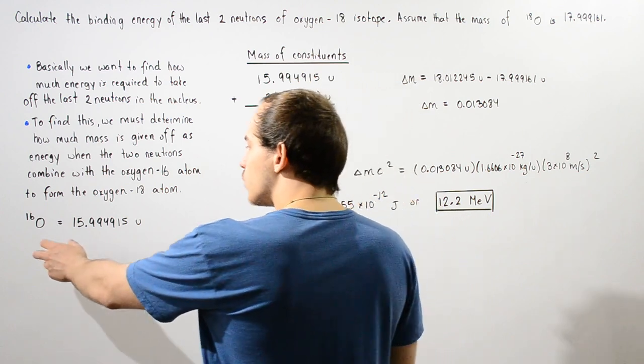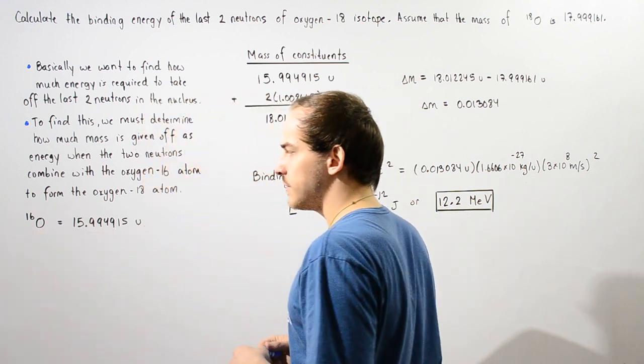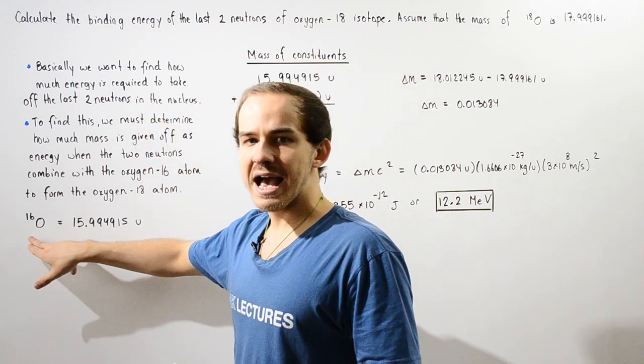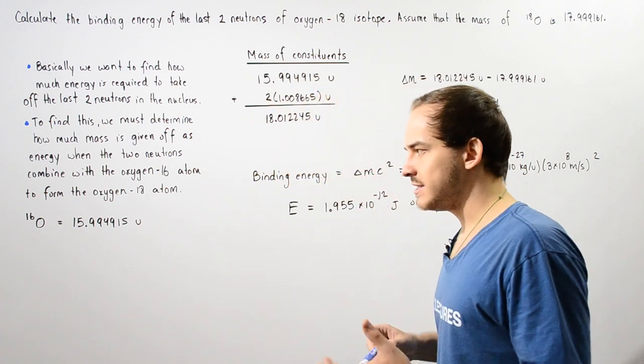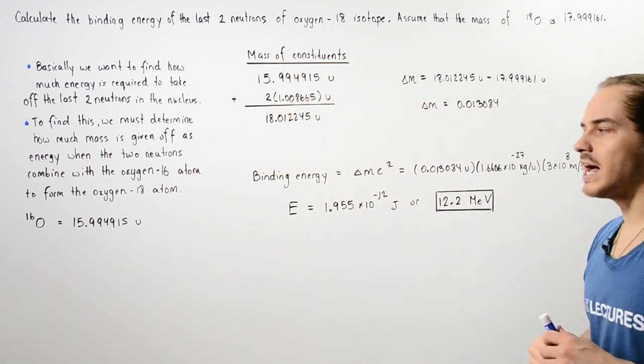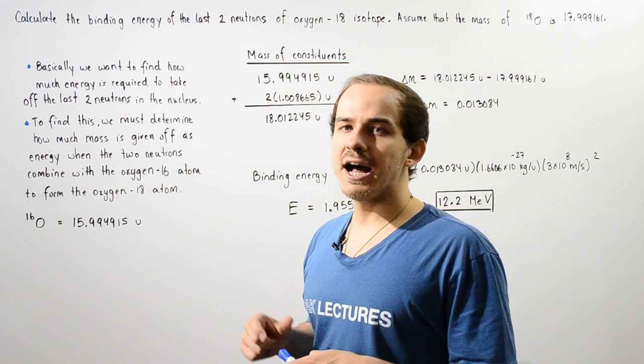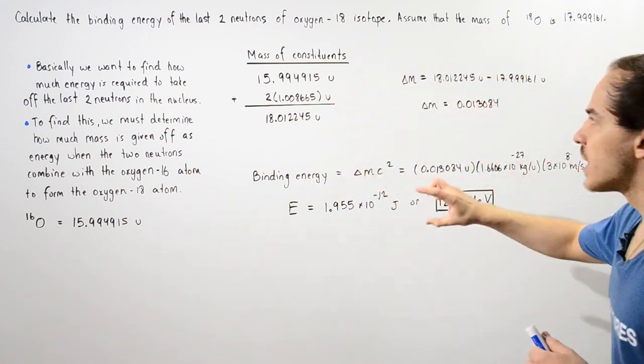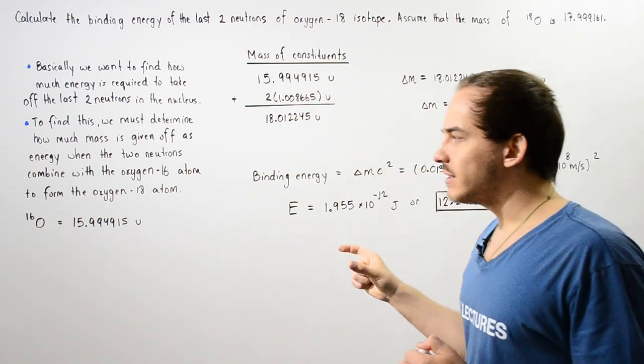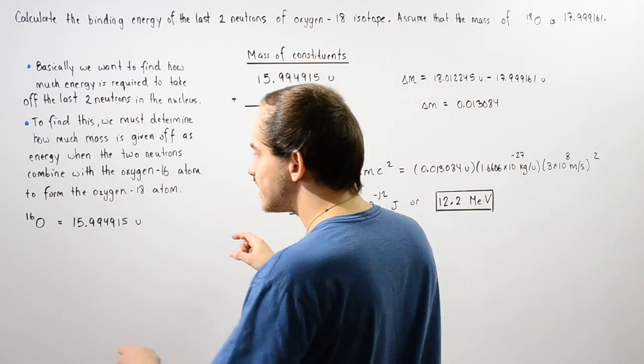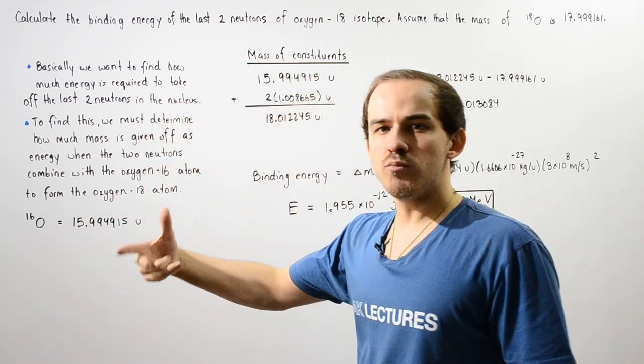We're going to need to use this piece of information: the fact that the mass of our oxygen-16 is 15.994915 unified atomic mass units. Basically, we want to calculate the total mass of this plus two more neutrons.